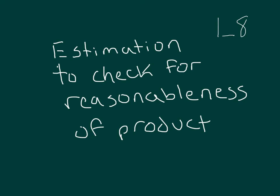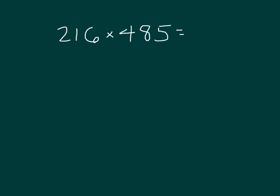Within this lesson, we'll look at estimation to check for the reasonableness of a product. Here we'll start with the problem 216 times 485. We'll start with our standard algorithm first, 216 times 485.